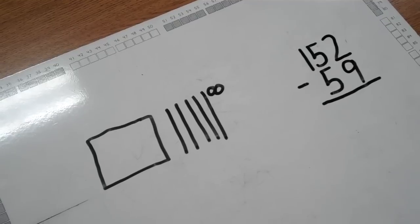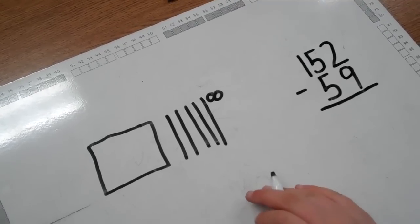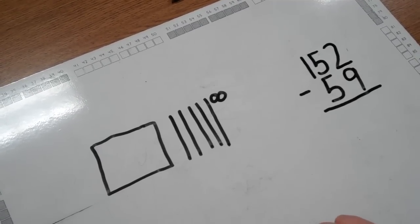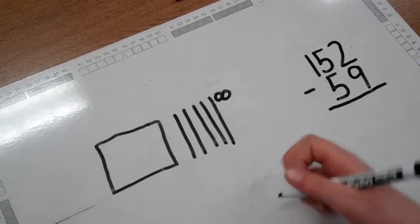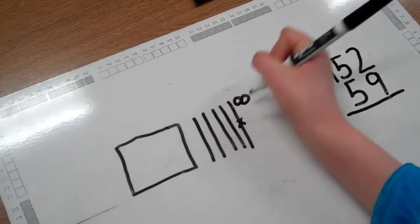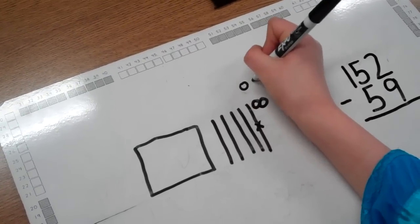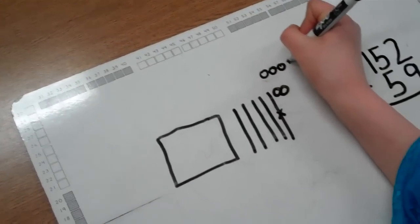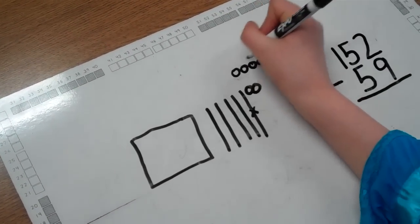Now the student is going to check their math drawing and see can I subtract 9. They see that they can't, so they're going to ungroup a 10 into 10 ones.